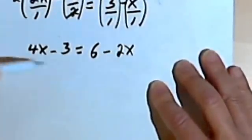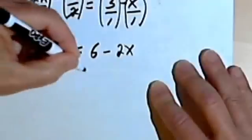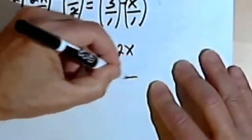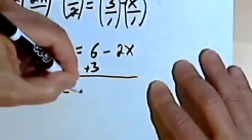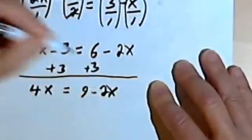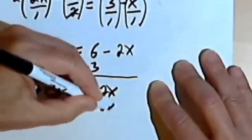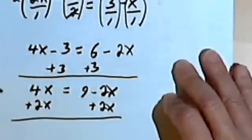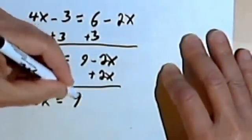So now we're back to the kind of problems you're used to. So what I'm going to do is, let's see, I'll add 3 to both sides. I want to isolate the x. And I'm going to get 4x equals 9 minus 2x. I still have an x over here, so I'll add 2x to both sides. That's going to give me 6x equals 9.